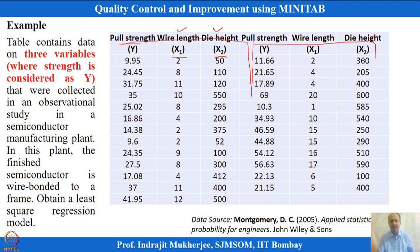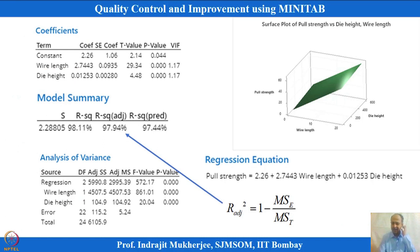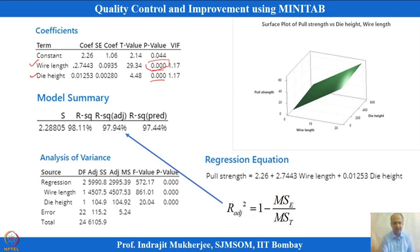This is a scenario where multiple regression is required to model y as a function of x1 (wire length) and x2 (die height). In MINITAB, we run the regression analysis including both variables. The p-values are examined — if p is significant, it indicates the variable is important and should be included in the model.